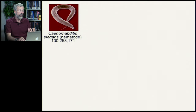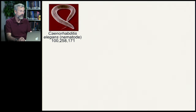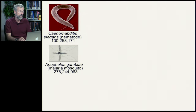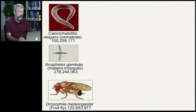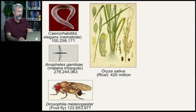Getting into more complicated multicellular organisms: this little worm we're going to look at many times is called Caenorhabditis elegans, a nematode whose genome consists of 100 million base pairs. The mosquito that causes malaria, Anopheles gambiae, is about 270 million base pairs. Drosophila, a fruit fly important in genetics, is over 100 million base pairs. And rice, what we have for dinner, is about 400 million base pairs.